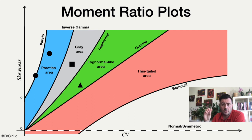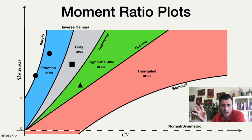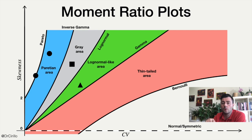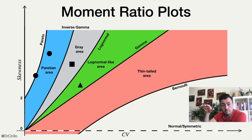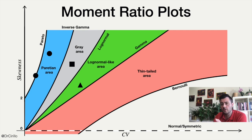The same applies if your empirical combination of coefficient of variation and skewness falls in the log-normal area. Or if you consider a normally distributed random variable, it will always fall on the horizontal line that you see at the bottom of the plot. If you want more details about this plot, I refer you to the extra readings.